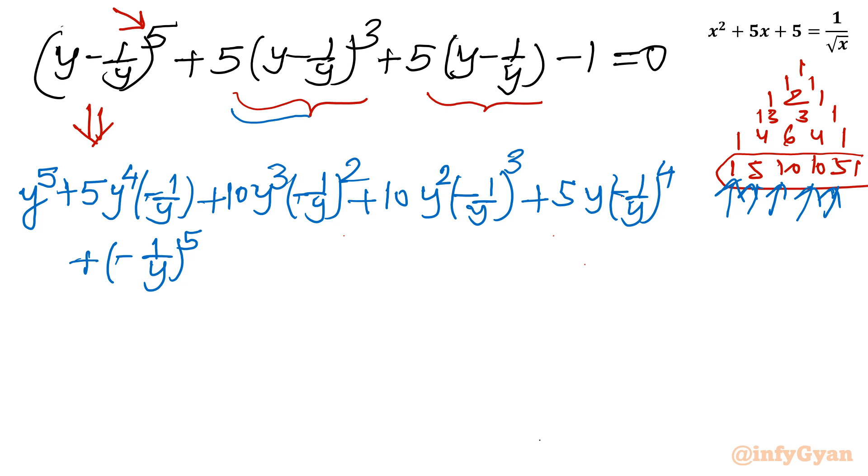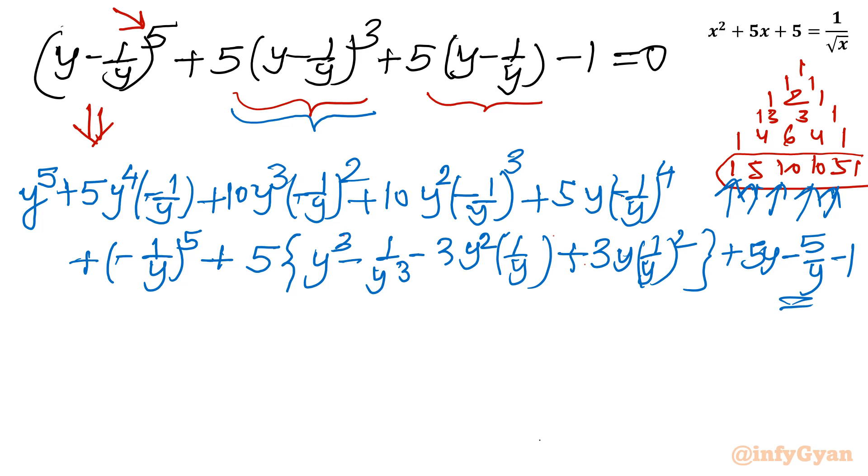Now remaining this term I will use algebraic formula. So let me write 5(y³ - 1/y³) - 3y²(1/y) + 3y(1/y)². This part is done. And then we are having 5y - 5/y, simply multiplying it. -1 = 0.